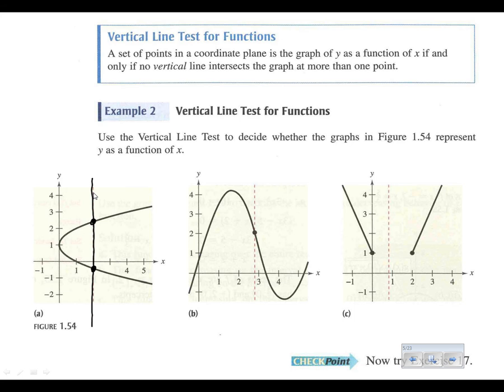It only has to happen once for it not to be a function. So even if everywhere it looks like a function except for in one place, that would still violate the vertical line test and would not be a function.